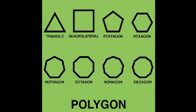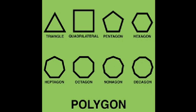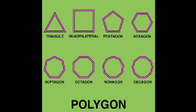A polygon is a shape with lines that connect. The number of sides tells us the name of the shape.